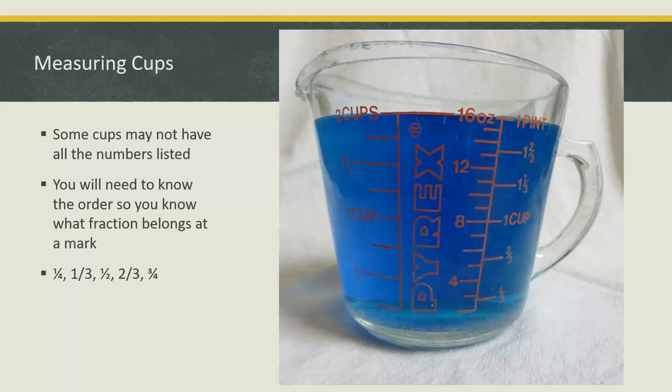Looking at this measuring cup, you'll notice that the first line on the very bottom doesn't have a number by it. Let's take a moment to look at the pieces that are numbered. Over on the left, I see 1 1/3, 1/2, 2/3, and 1/2. That should let us know that what's missing is the one smaller than 1/3, which is 1/4.